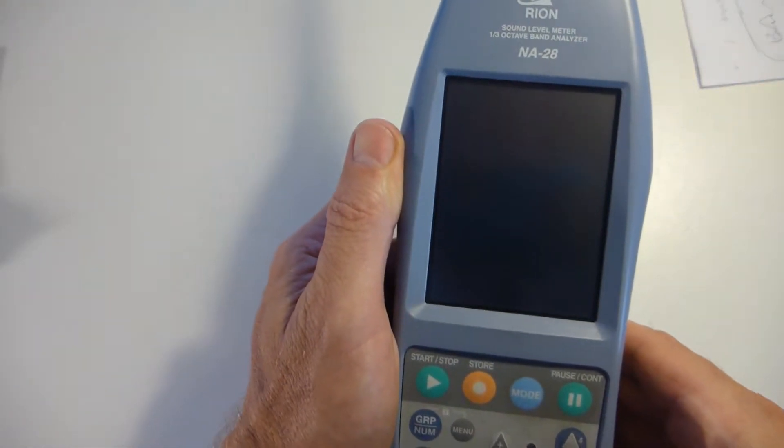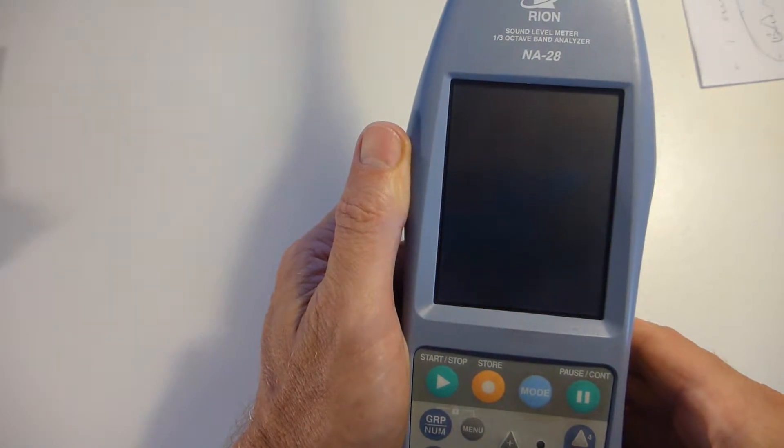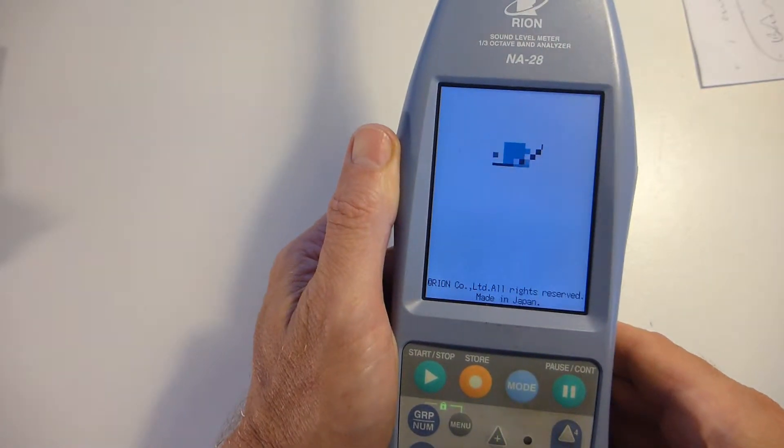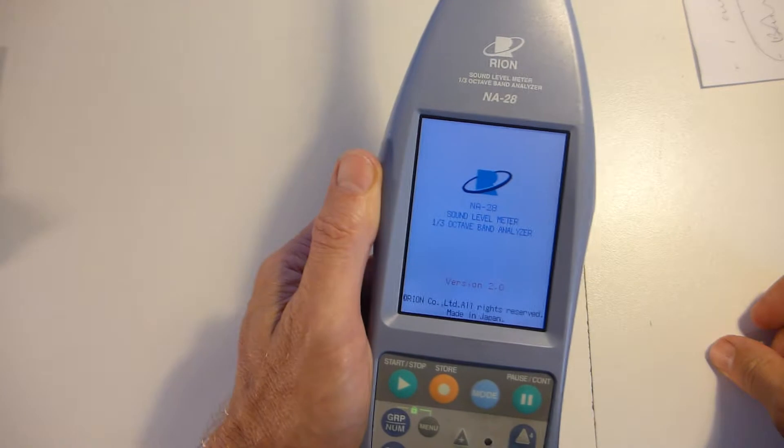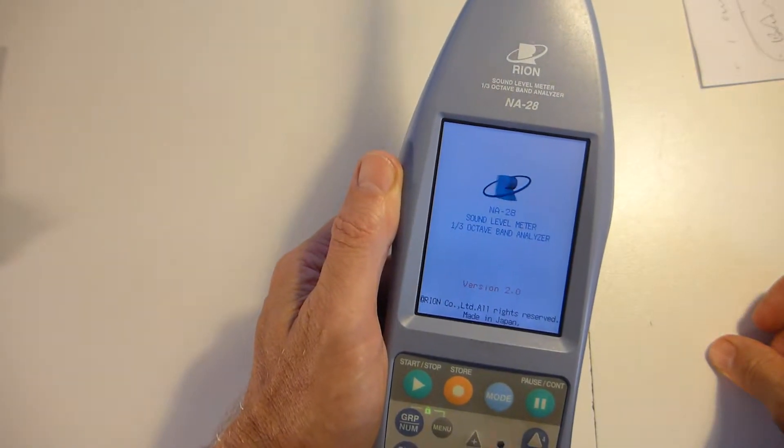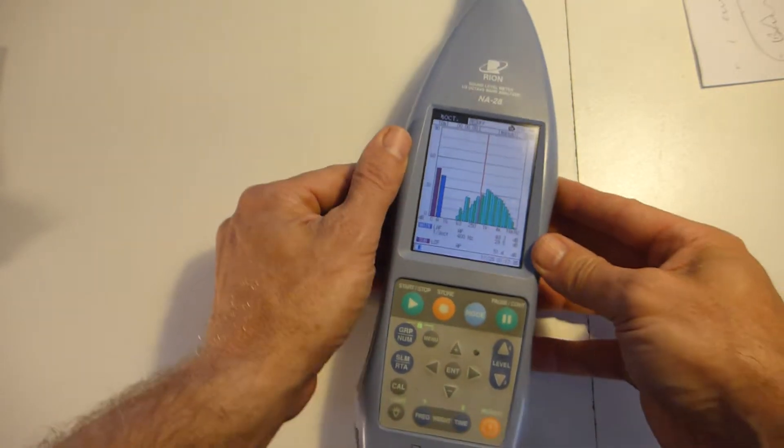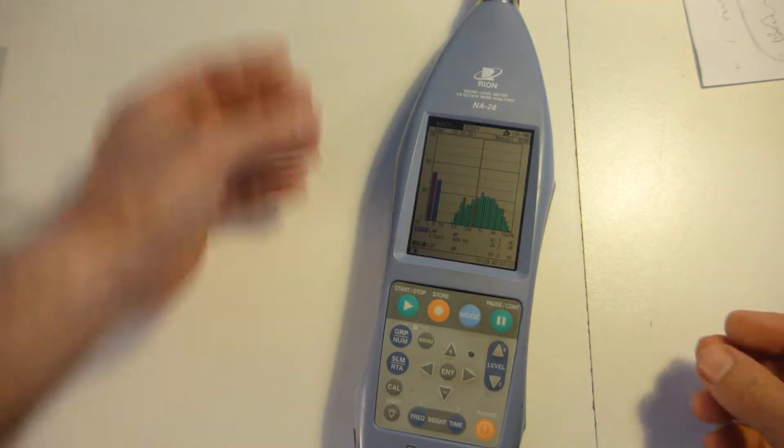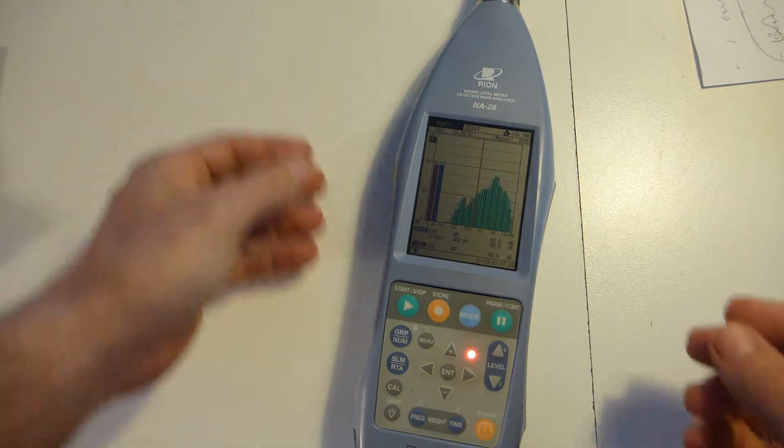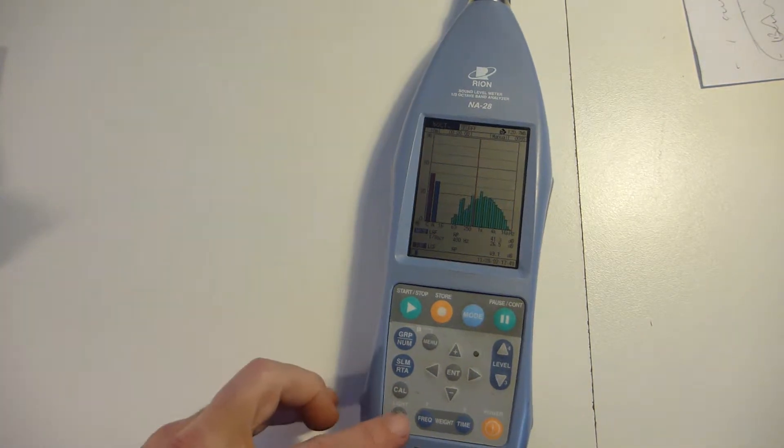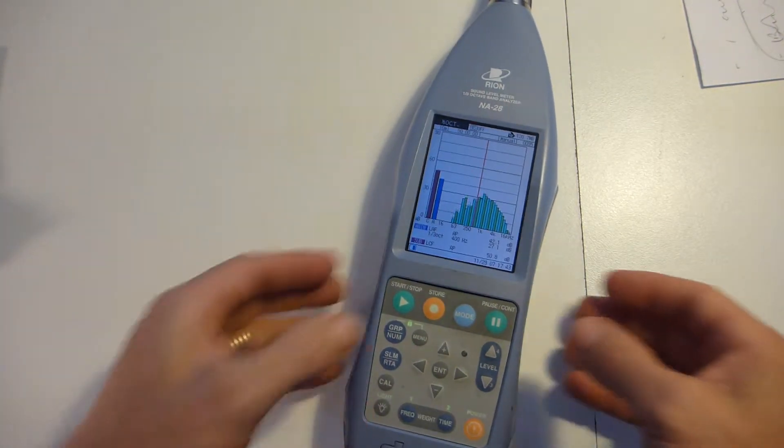Basically, after you boot the unit up, what you'll find is that the unit, whilst it can do it, doesn't have the limitation of five statistical parameters which the NA27 suffered from. But it can't do LC peak waveform peak at the same time as single or third octave frequency analysis or statistical analysis. So if you go into the menu and select sub channel...